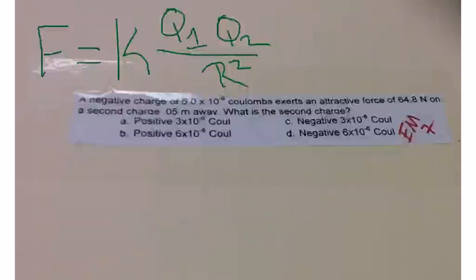Alright, we are doing the EM7. A negative charge of 6 times 10 to the negative 6 coulombs exerts an attractive force of 64.8 N on a second charge 0.05 meters away. What is the second charge?